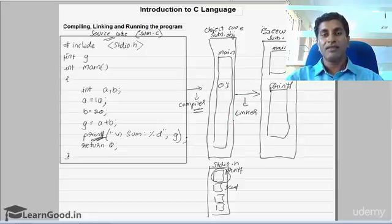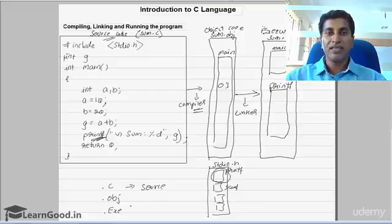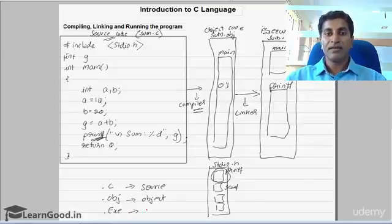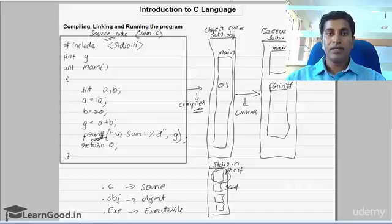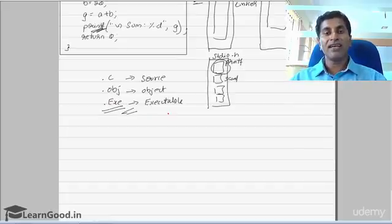Whenever you write a C program, three files get created: the .c file (source code that we created), the .obj file (object code created by the compiler), and the .exe file (executable code created by the linker). These are the three files created when you compile and run the program. Once you have the executable code, you can directly run the program.